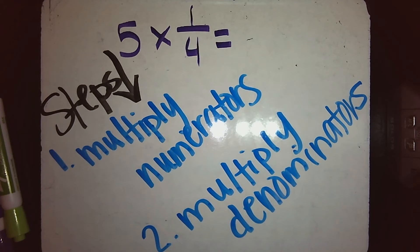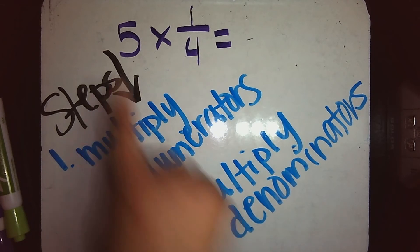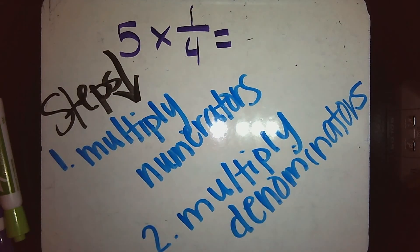When multiplying fractions, I want to multiply my fractions straight across from each other. My steps are: number one, multiply my numerators first, and number two, multiply my denominators.